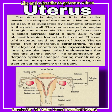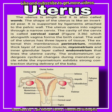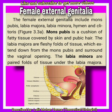The uterus is a single hollow muscular inverted pear-shaped organ, located in the pelvic region between the bladder and rectum, and suspended by a ligament called mesometrium. It serves as the site of fetal growth during pregnancy. The wall of the uterus is composed of three layers of tissue: perimetrium, myometrium and endometrium.